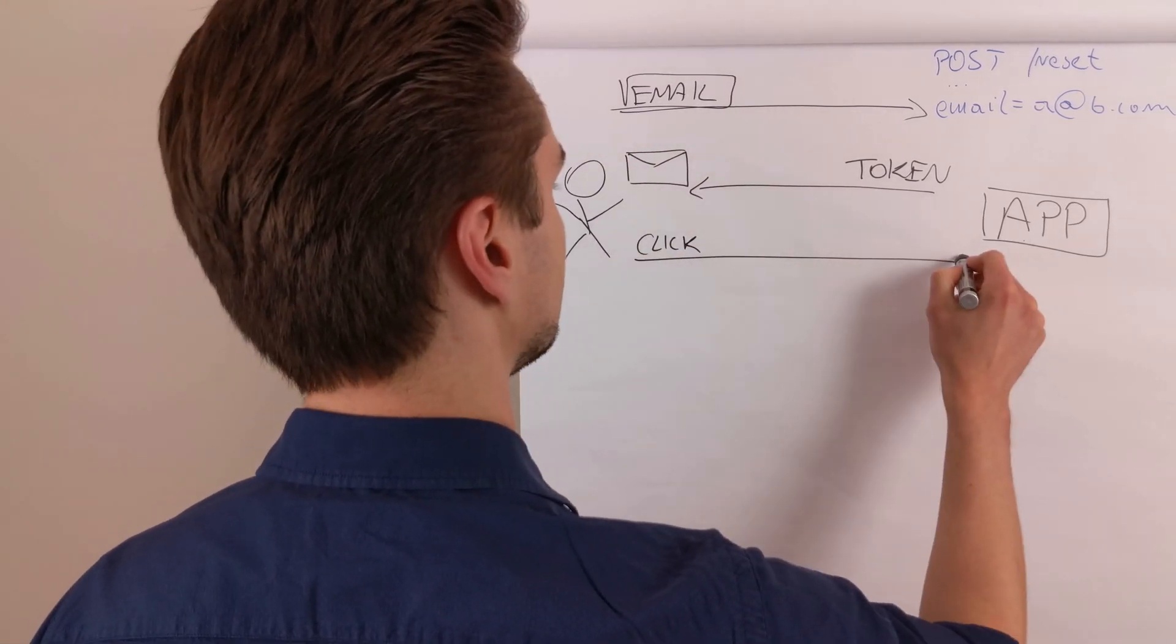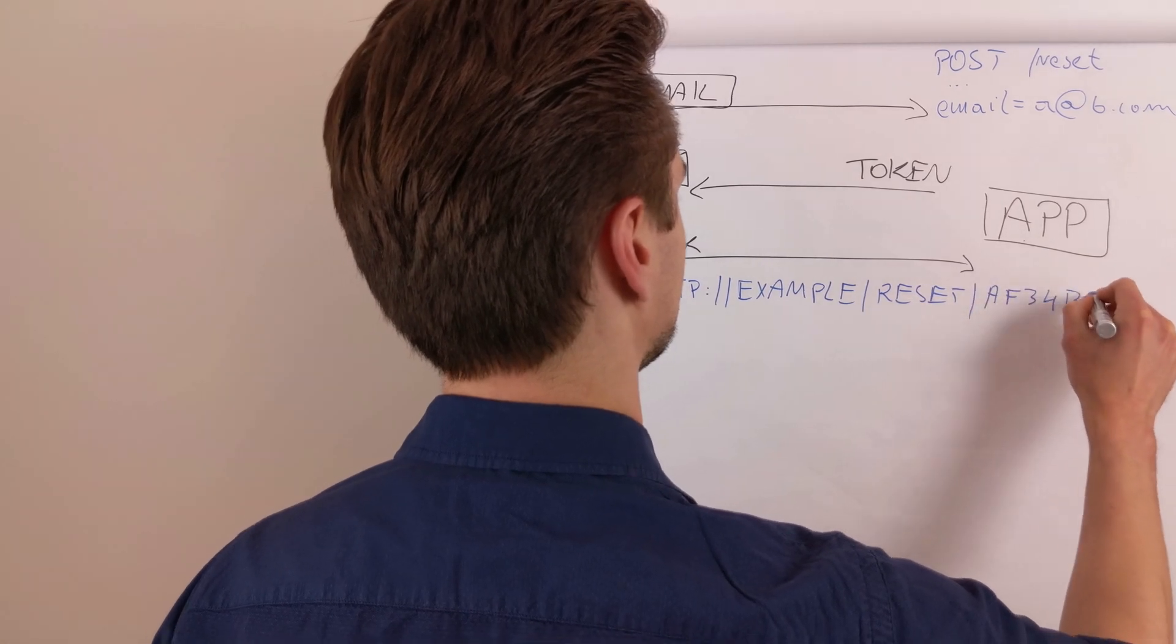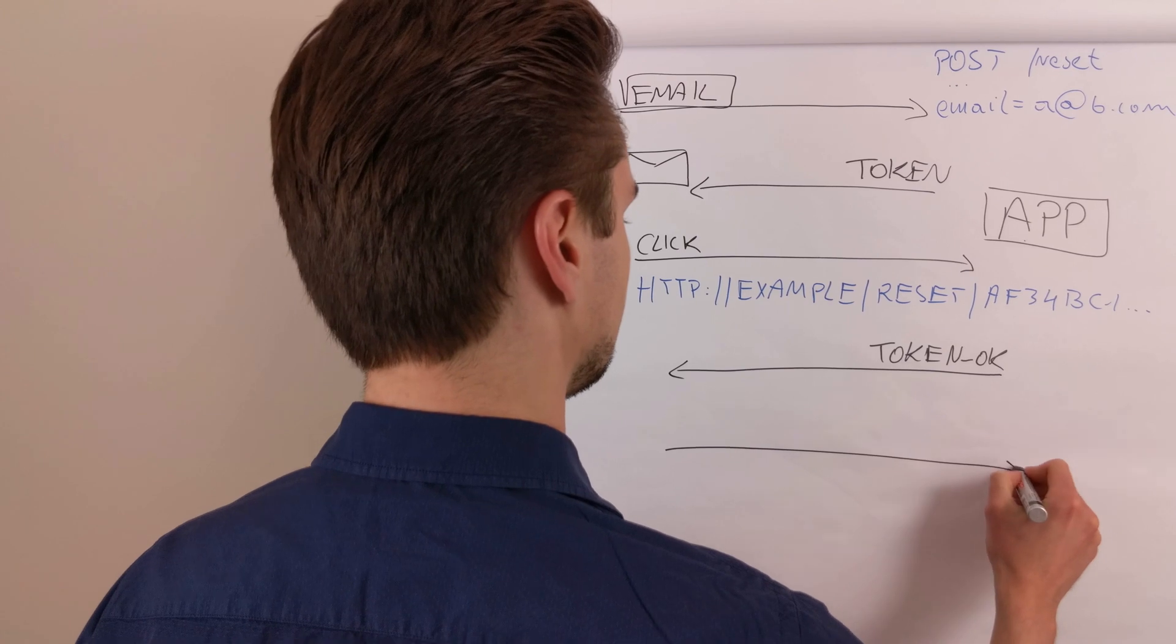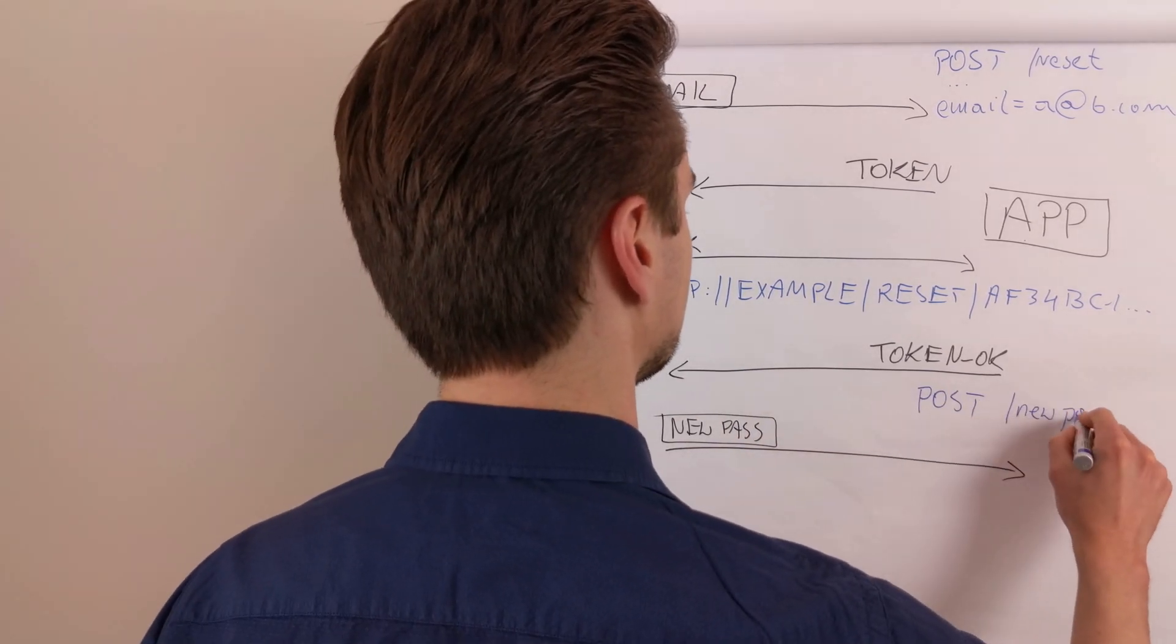The system sends a reset link in an email to their mailbox. The user clicks the link with the token and the application verifies the token. The user is presented with the reset password form and they send a new password to the application.